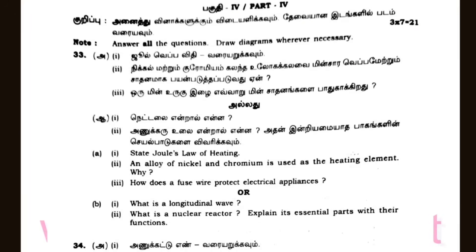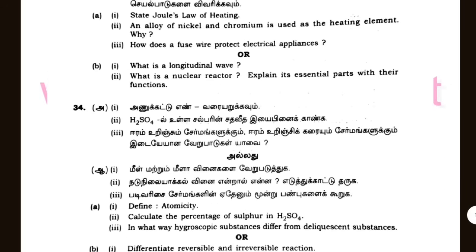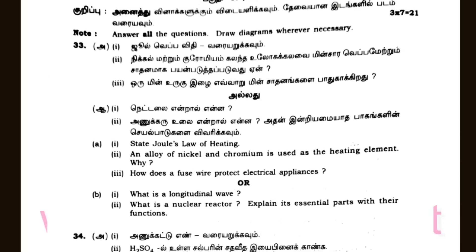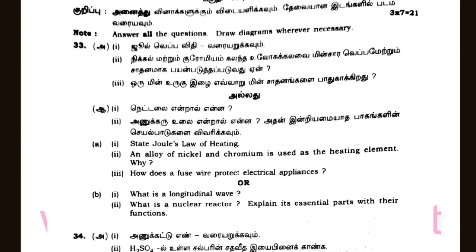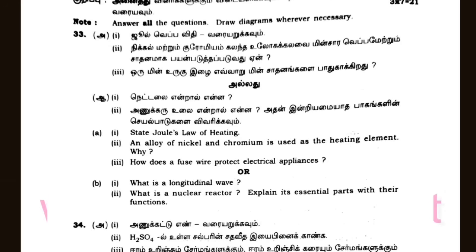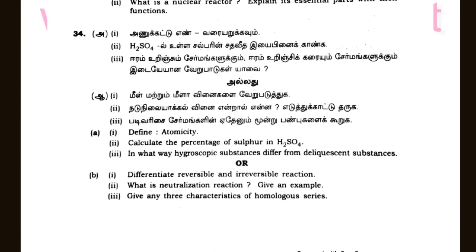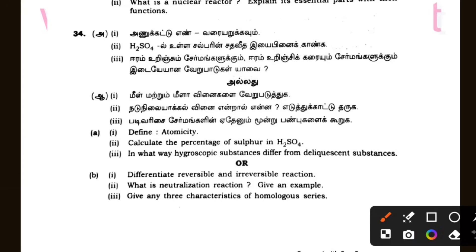Joule's law of heating — first day. Nickel and chromium are used as heating elements, I think that's chemistry. If you have any doubts, you can see it — do not worry. Here are questions 34 onward: define autocatalysis and reversible reactions. Give any 3 characteristics of a homologous series. These are the best and hopefully easy.